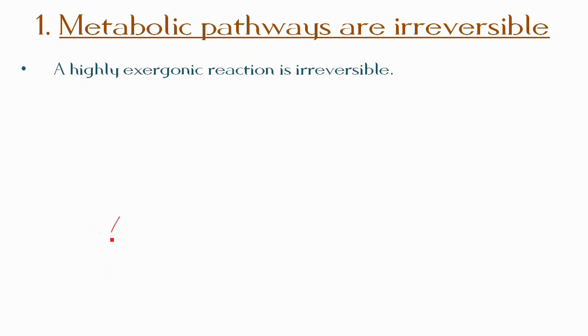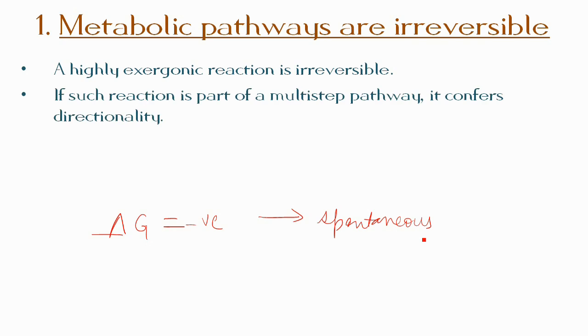An exergonic reaction is a reaction where the change in Delta G is negative. A negative Delta G means that it is a spontaneous reaction. If such a reaction is part of a multi-step pathway, it confers directionality on the pathway, making the entire pathway irreversible.